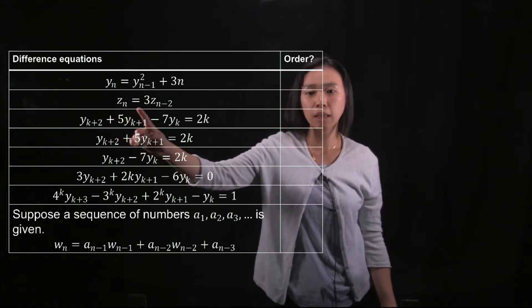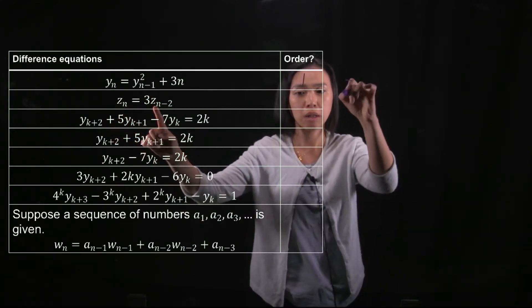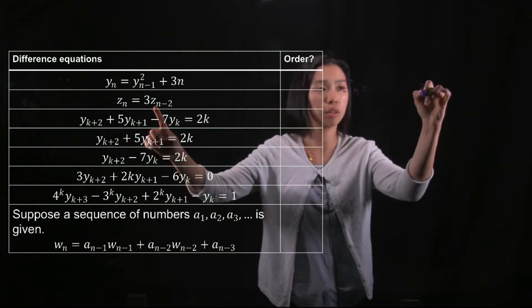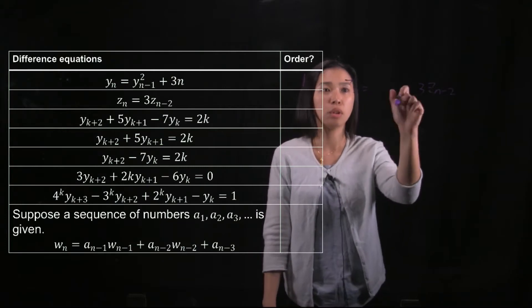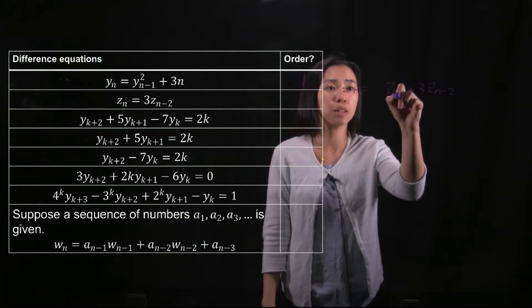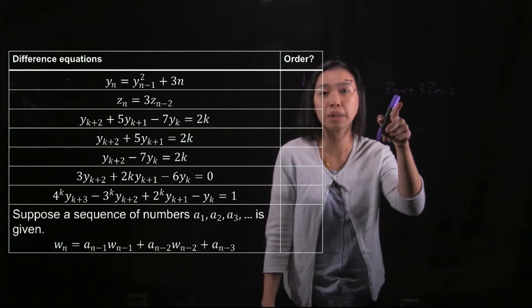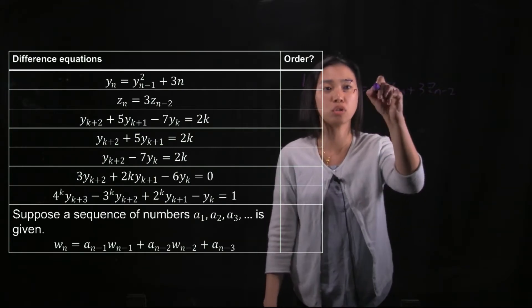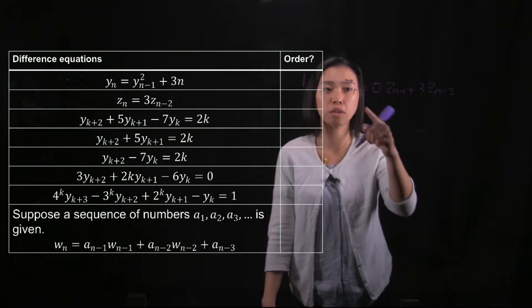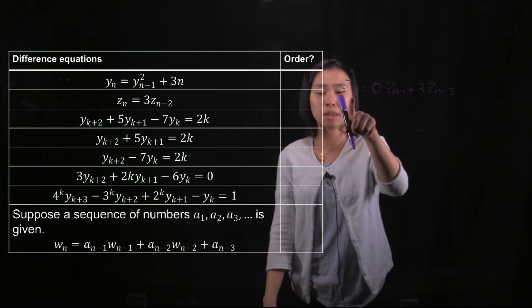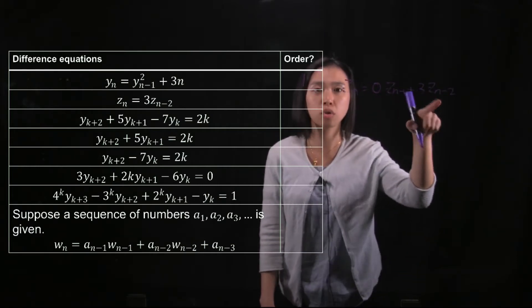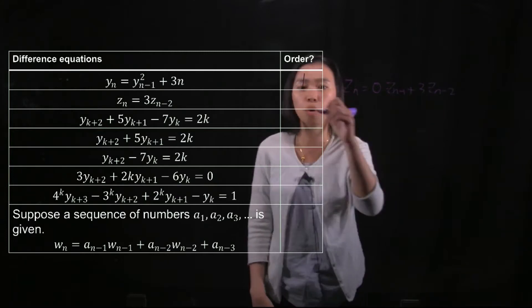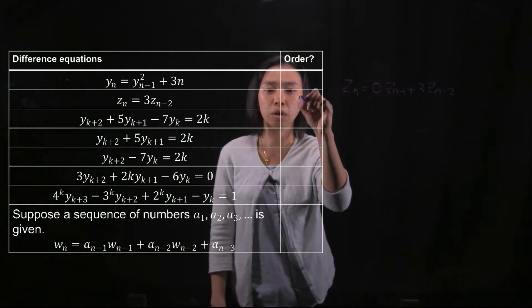Second one: zn equals 3 zn minus 2. So you may realize that something is missing here. zn minus 1 is actually missing here, but there should be a zero coefficient. So I put down a zero here. So the whole thing is zn depends on zn minus 1 and zn minus 2. So zn depends on the previous two terms and then the order would be 2.